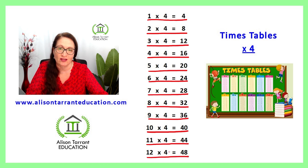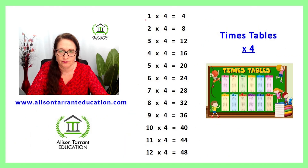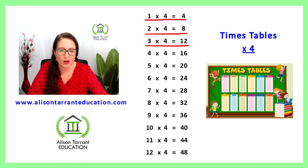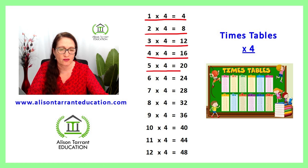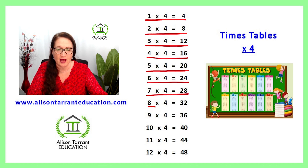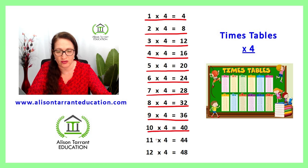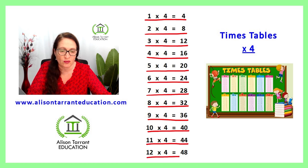Excellent. Let's practice that again. 1 times 4 is 4, 2 times 4 is 8, 3 times 4 is 12, 4 times 4 is 16, 5 times 4 is 20, 6 times 4 is 24, 7 times 4 is 28, 8 times 4 is 32, 9 times 4 is 36, 10 times 4 is 40, 11 times 4 is 44, 12 times 4 is 48.